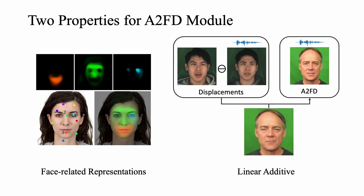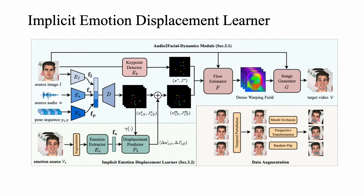However, the face-related displacements also contain undesirable mouth movements and structural deformation, making them not directly applicable to our current model. So, we design an implicit emotion displacement learner to learn only emotion-related displacements on the audio-to-facial dynamics module's face-related representations.